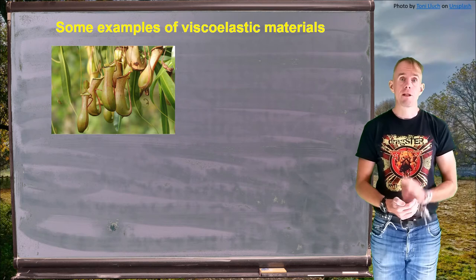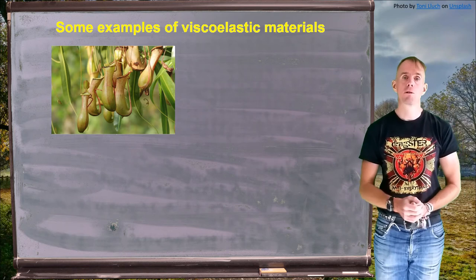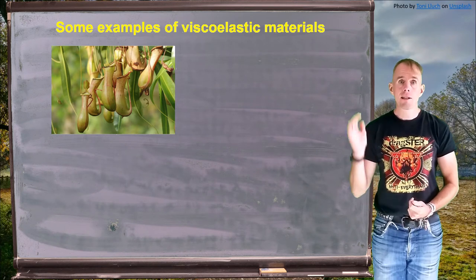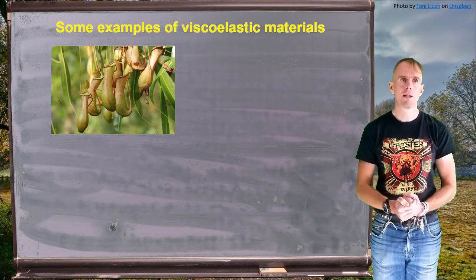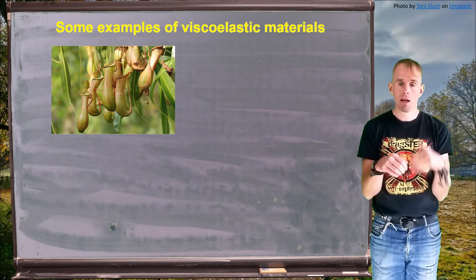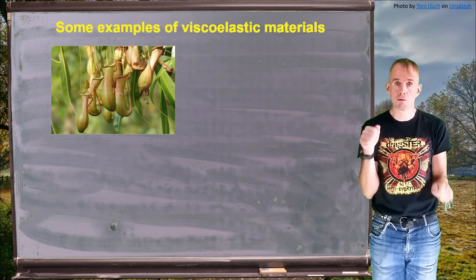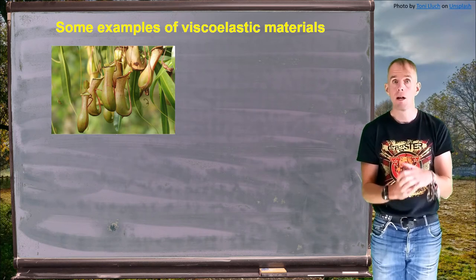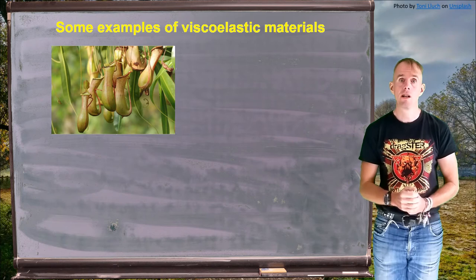Viscoelastic materials really are everywhere — in nature, in engineering, you're wearing them, they're on your kitchen shelves. The picture on my blackboard shows a pitcher plant. These plants are native in many tropical and subtropical parts of the world, and some pitcher plants have highly viscoelastic liquids in their pitchers. They are carnivorous plants that trap insects. As an ant struggles in the liquid, the viscoelastic liquid forms strands against any limbs moving away from the surface and draws them back in — a viscoelastic effect that has evolved to supplement the nutrition of these plants.